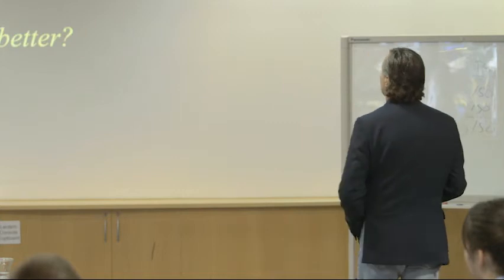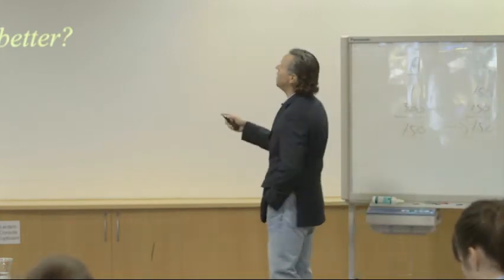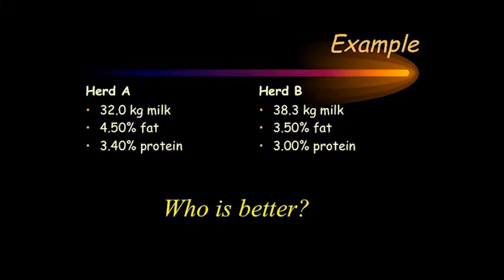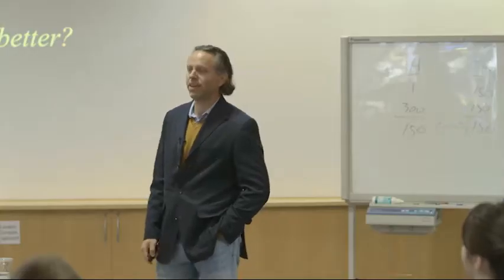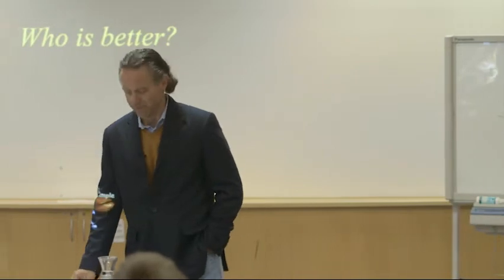Let's think about how this would impact a herd. We've got two herds here: herd A is a lower volume, high component herd, and herd B is a higher volume, low component herd. So the question is, who would you rather be? You had this choice — who would you rather be?